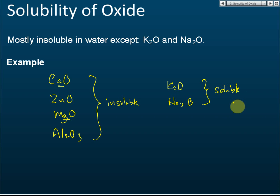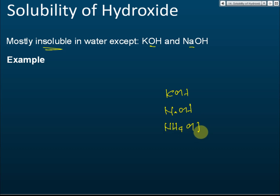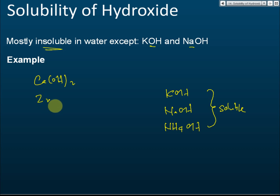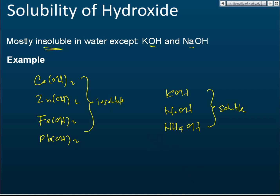For hydroxide: most hydroxides are insoluble except potassium hydroxide, sodium hydroxide, and ammonium hydroxide — these are soluble. Other hydroxides like calcium hydroxide are slightly soluble, but zinc hydroxide, iron hydroxide, and lead hydroxide are insoluble. So those are the solubility rules for oxides and hydroxides.